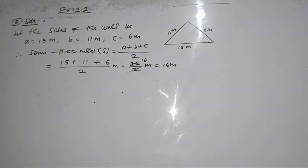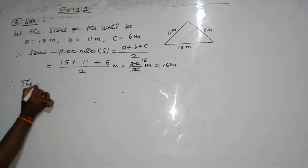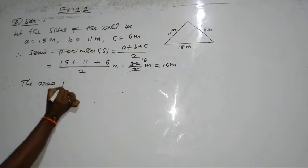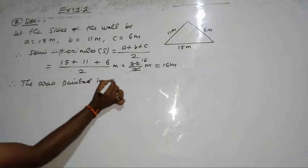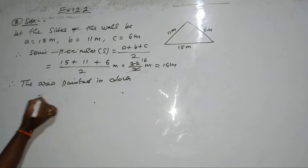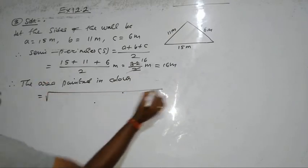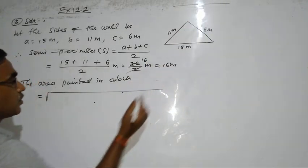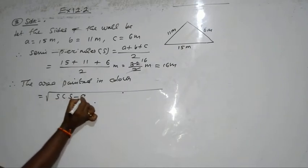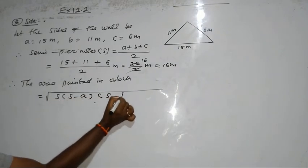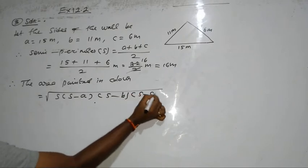Therefore, the area painted in color, that is the area of the triangle, the triangular wall. We are painting the wall only. So, the area of the triangle will become root of S into S minus A into S minus B into S minus C.